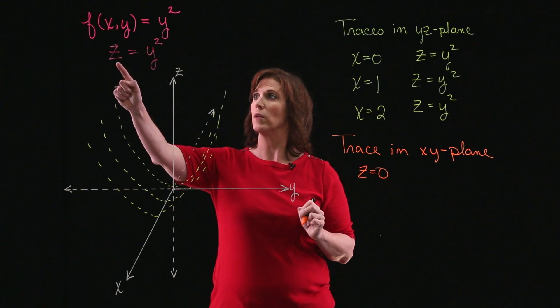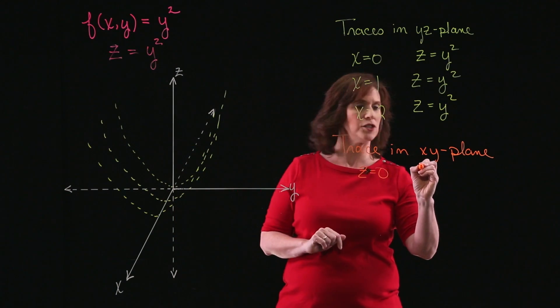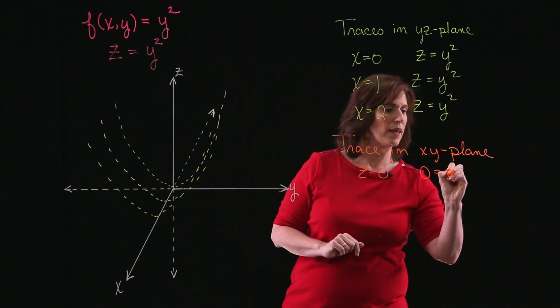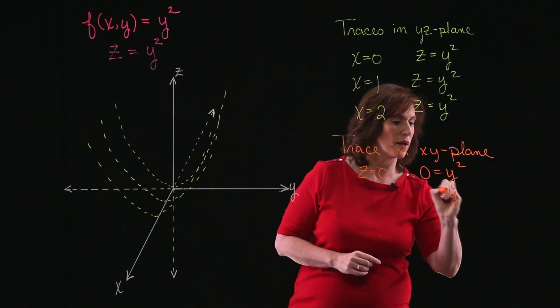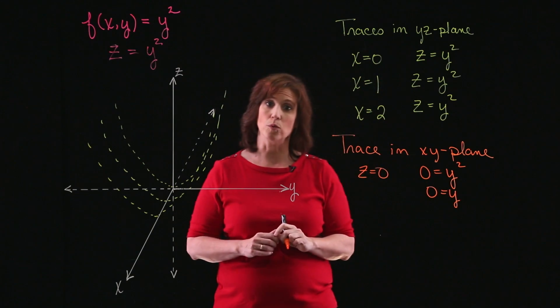What happens in that case? Well, if z equals 0, my equation turns into 0 equals y squared. And if 0 equals y squared, I know that y equals 0.